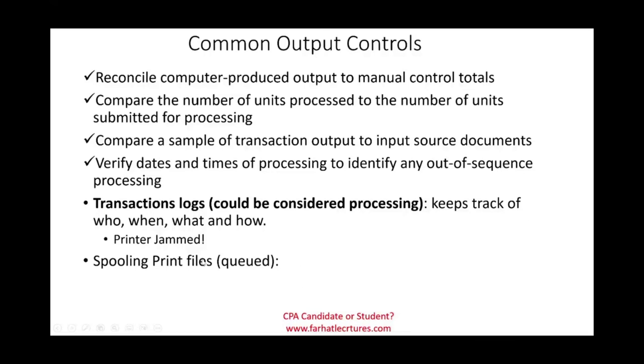Also, talking about the printer, sometimes the printer will have what's called spooling print files, where the file is queued. This is important as an output control because sometimes the company might be printing sensitive data. Before you can print this data, for example, you send something to the printer - maybe a sales report. That sales report gets queued into the printer, but it doesn't print until you walk to the printer and you input some sort of code or password that triggers the output.